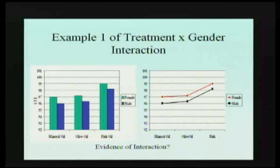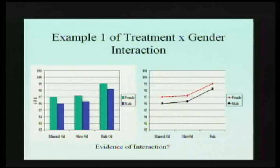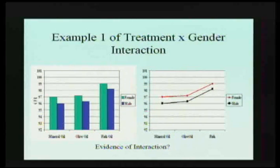Most of the time you'll see this presented in articles as bar graphs. I like to present it as a line graph, or draw lines on bar graphs, to look for interaction effects. What you can see here is that the lines are pretty much parallel, which means no matter what, both groups are reacting the same way to the treatments — so there's no interaction effect in this case.